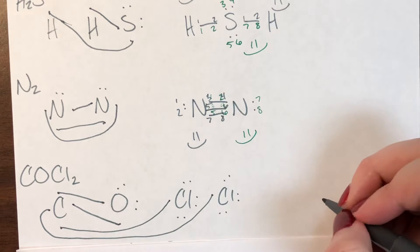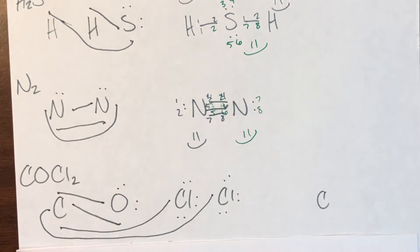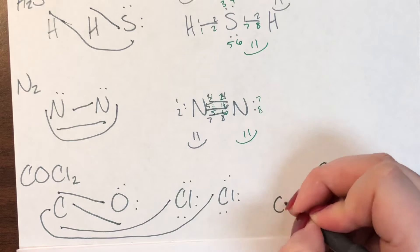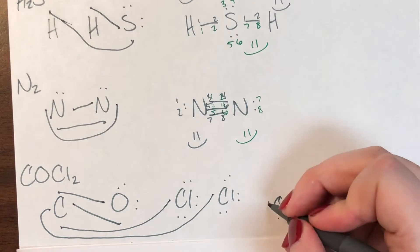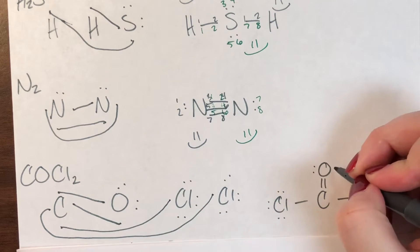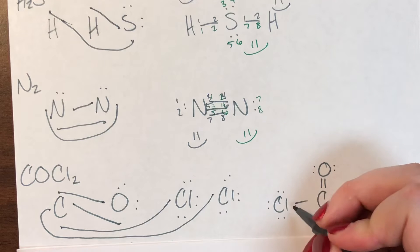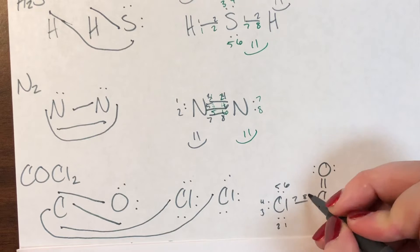I'll redraw this with carbon in the middle as my central atom, oxygen double-bonded to carbon, and chlorine on either side with single bonds. Each chlorine had three lone pairs, so I'll add those back in, and oxygen had two lone pairs, which I'll also add back in. Counting the first chlorine: one, two, three, four, five, six, seven, eight — chlorine is good.